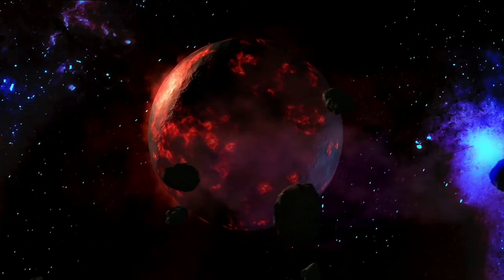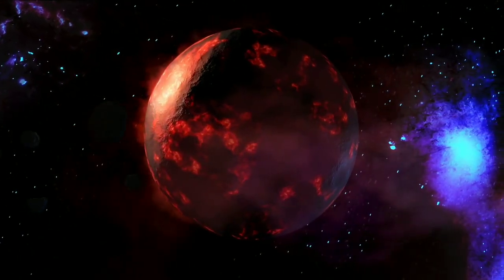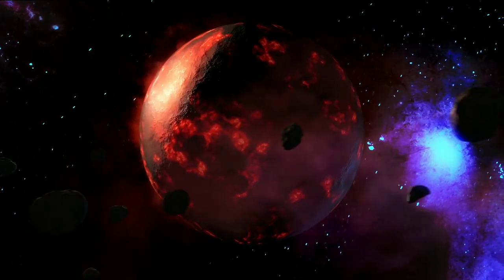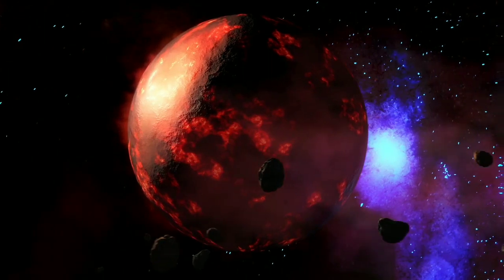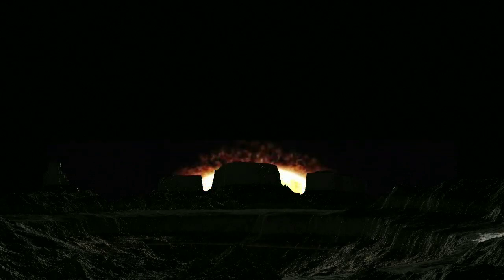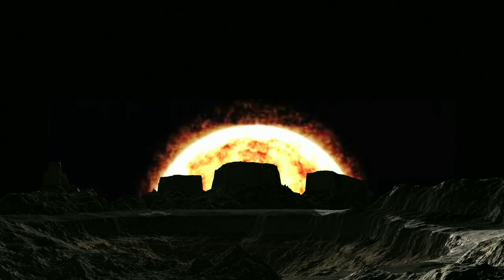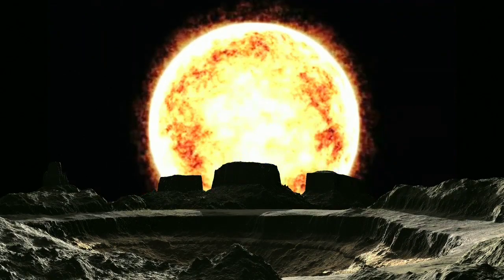As a transiting planet, Gliese 486b gives scientists two unique opportunities to study this atmosphere. First, when the planet passes in front of its star and a fraction of starlight shines through its atmospheric layer, a technique called transmission spectroscopy. And then when starlight illuminates the surface of the planet as it orbits around and behind the star, called emission spectroscopy.